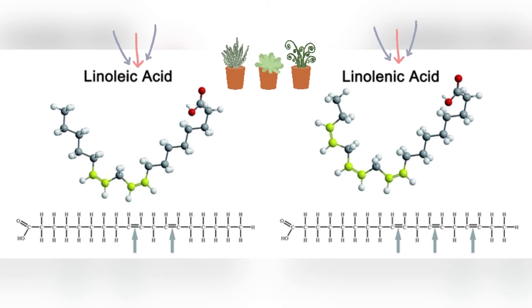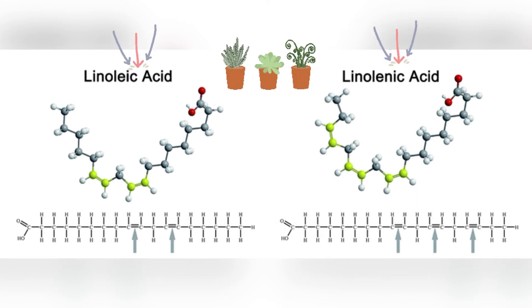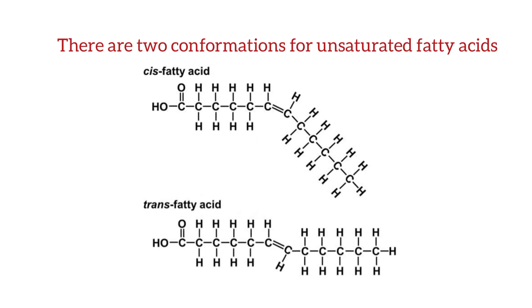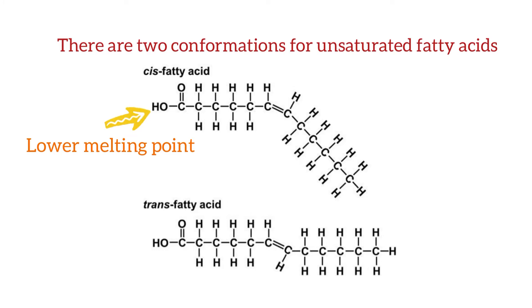The melting points of lipids containing fatty acids increase as the length of the carbon chain increases, and decreases as the level of unsaturation — meaning double bonding — increases. Note that the melting points of unsaturated fatty acids are also affected by geometric isomerism. There are two conformations for unsaturated fatty acids: cis conformations and trans conformations. Cis conformations have lower melting points than trans conformations because they cannot pack closely together, which would increase intermolecular force.